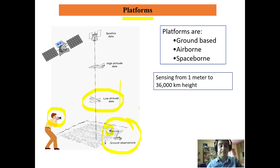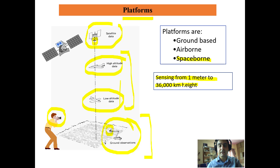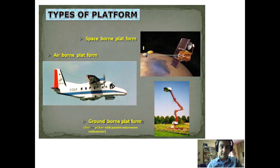We can also have high-altitude airborne data from aircraft — these are known as airborne platforms, while the cranes and cameras are ground-borne platforms. Additionally, we have spaceborne platforms, such as satellites placed in space, on which a sensor is placed. The satellite revolves around the earth and the sensor continuously captures images. Remote sensing platforms range from one meter to 36 kilometers in height, covering ground-borne, airborne, and spaceborne platforms.